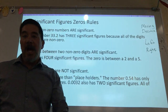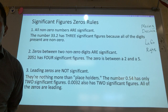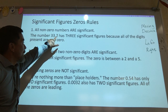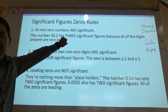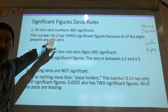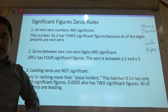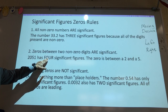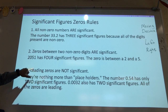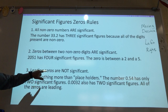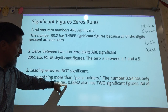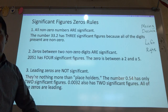Quick review. All non-zero numbers are significant. The 3, the 3, and the 2 in 33.2 are all significant. So if I said how many significant figures are in 33.2, you would say 3. Zeros between non-zero numbers count. Leading zeros never count, so a number like 0.02 only has two significant figures.